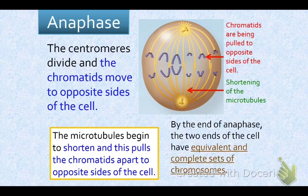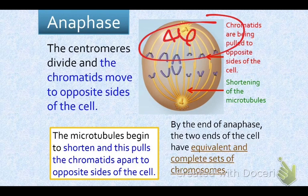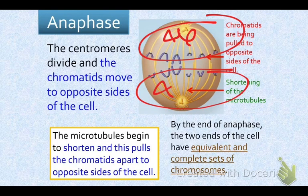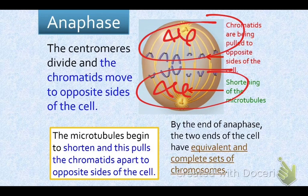So now, in a human cell, this side would have 46 chromosomes and this side would have 46 chromosomes. The doubles have now been split up, so now each one has a complete copy of all the DNA necessary.